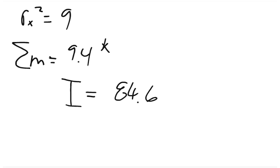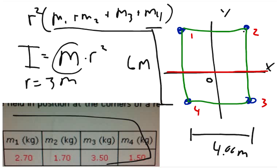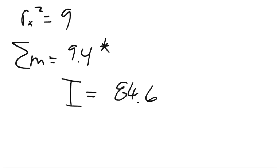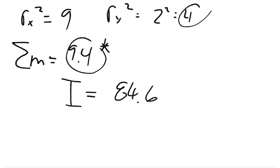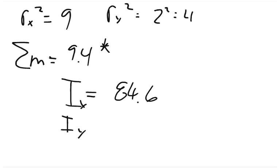Similarly, the total mass doesn't change when we switch axes. About the y-axis, the diameter is 4 meters, so the radius equals 2 meters. Therefore r² about the y-axis equals 4. We take 9.4 and multiply by 4 to get the moment of inertia about the y-axis: 37.6 kg·m².